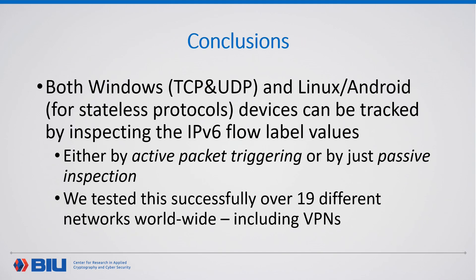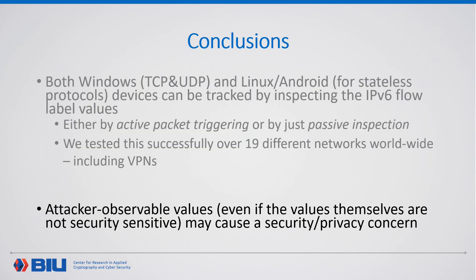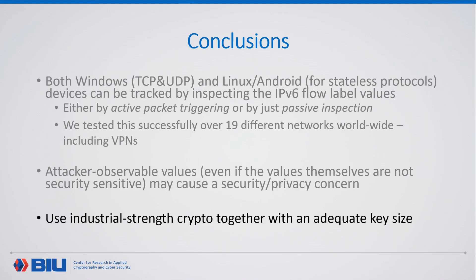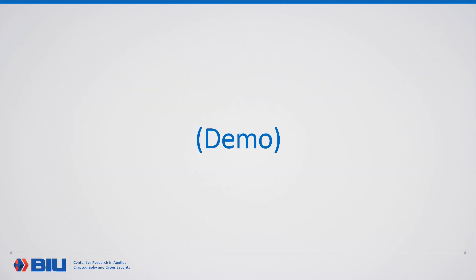In conclusion, we saw that it is possible to track Windows, Linux, and Android devices by inspecting the flow label values, either by active triggering or by passive inspection. This was tested successfully over 19 different networks worldwide, including VPNs. We also witnessed how attacker-observable values, even if they are not security sensitive, might be misused. We conclude with the recommendation that vendors should always use industrial-strength cryptography together with an adequate key size when such observable values are involved. We finish with a short video demo showing that for different browser choices, our HTML snippet generates the same device ID for the tested device.